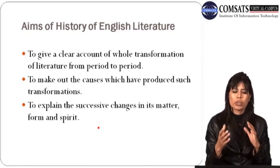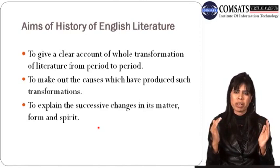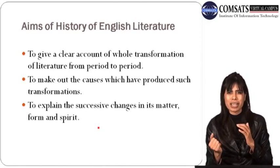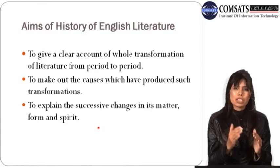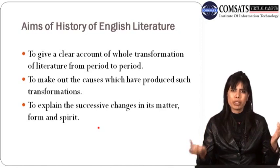The aims of History of English Literature are to give a clear account of the whole transformation of literature from period to period, and to explain successive changes as far as their matter, form, and spirit are concerned. This is an interdisciplinary approach where we mix too many disciplines together in one discipline.